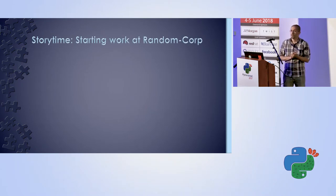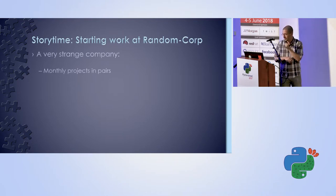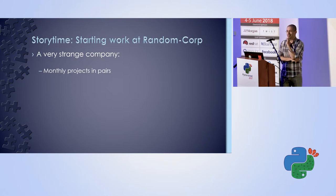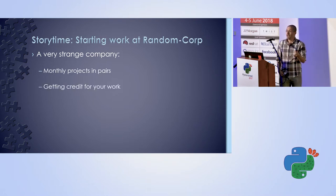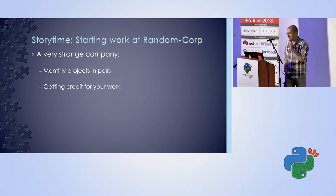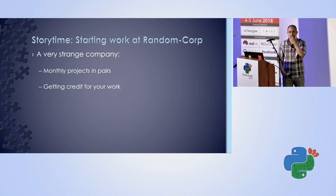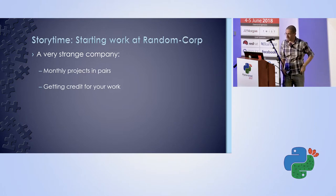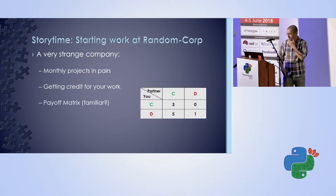Let's frame this with a story: you start working at Random Corp, a strange company where every month every two employees work together on a project. At the end of every project, each employee can secretly go to the boss and claim all the credit — let's call that defecting — or stay quiet, which is cooperating. If both cooperate, both get reasonably high credit. If both defect, they're annoying and get less. If one defects and the other doesn't, the defector gets a lot of credit while the sucker gets very little.